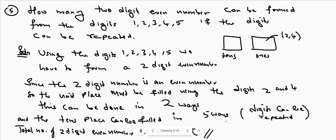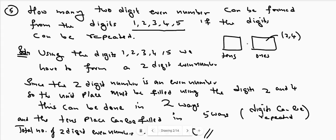Next, question number five: how many two-digit even numbers can be formed from the digits 1, 2, 3, 4, 5? Five digits are given and we have to form two-digit even numbers, filling the tens place and ones place. If repetition is allowed — for example, 55, 11, 22, 33, 44 are all allowed — then using the digits 1, 2, 3, 4, 5 we have to fill two places.